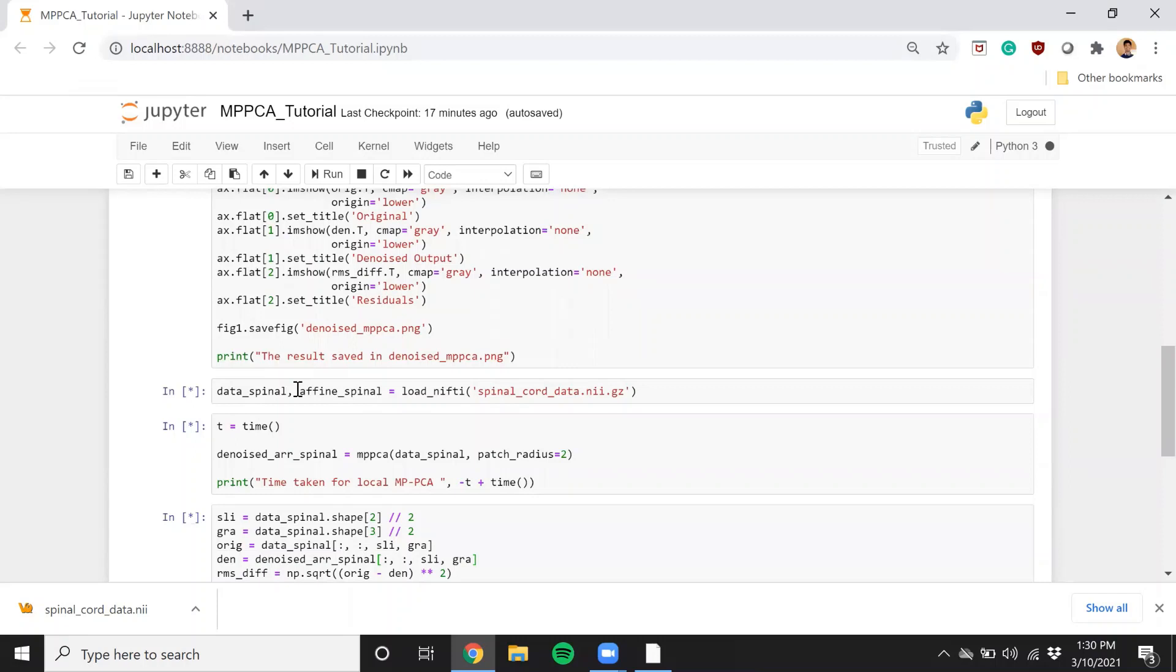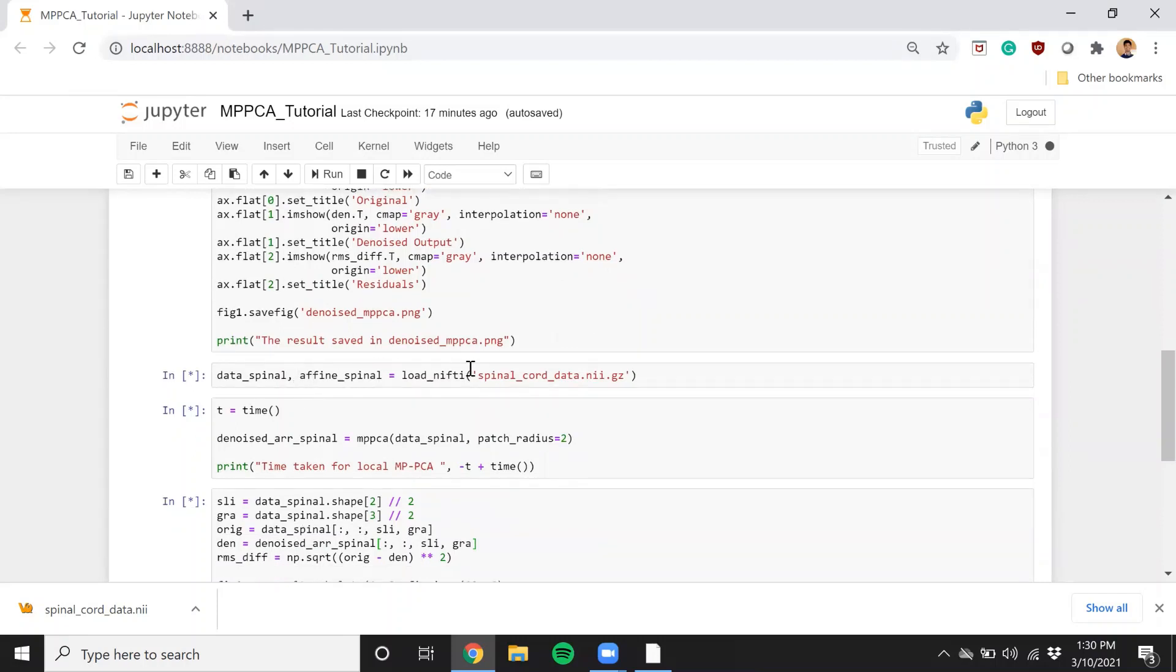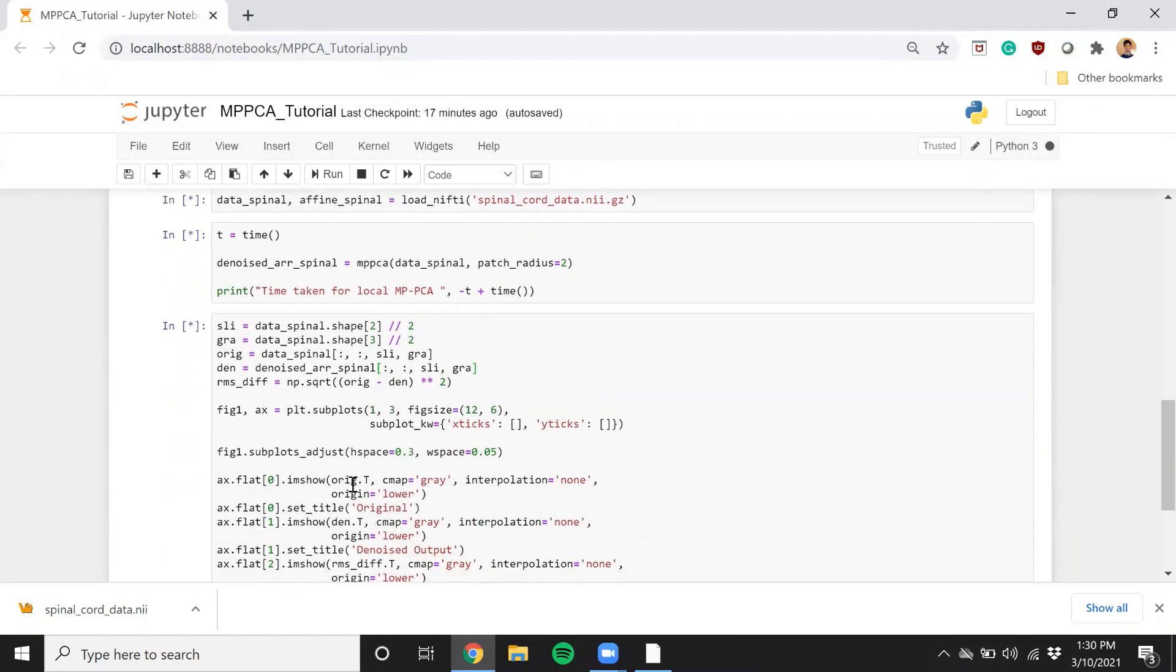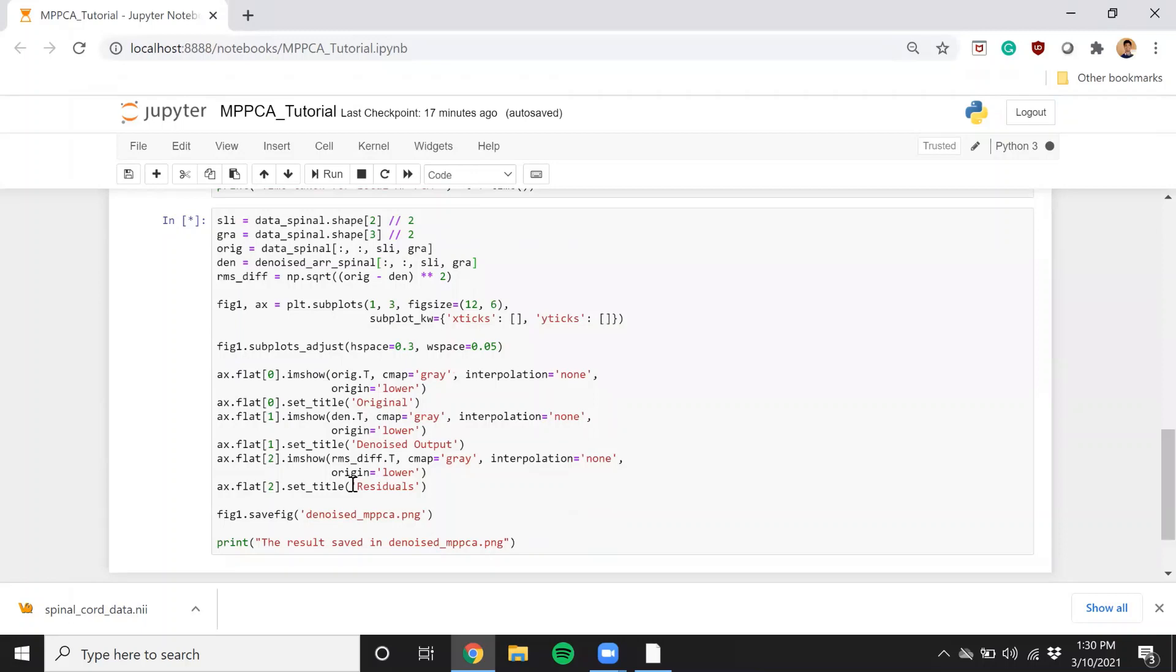Next, I'm going to, along with the diffusion data for the brain, I'm also going to show an example for the spinal cord data. The exact same process, load the spinal cord data, run the MPPCA command, and denoise it. And that should be it.